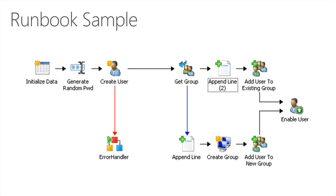You have a couple of activities, for example, generate random password, which does exactly what it says — it generates a random password. Then it uses the create user activity, which takes parameters from the initialized data and also uses the output of the generate random password activity to create a user in Active Directory.